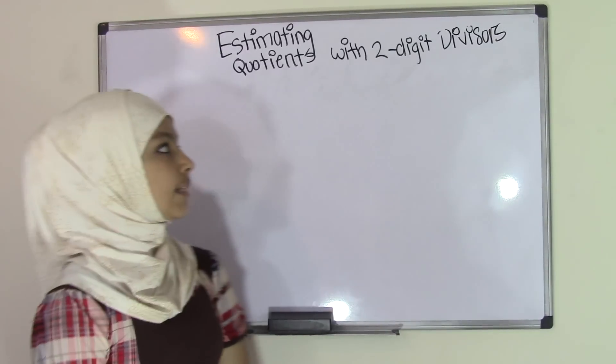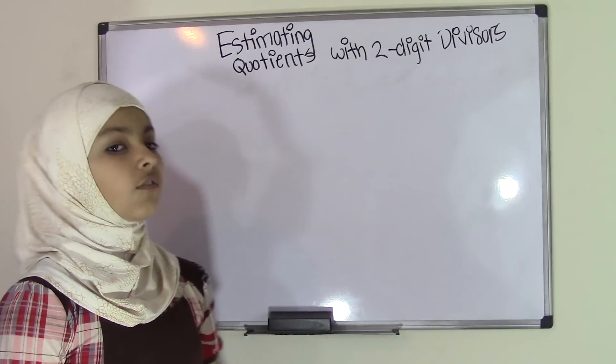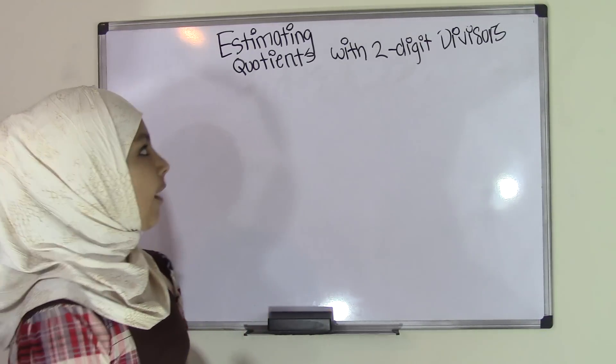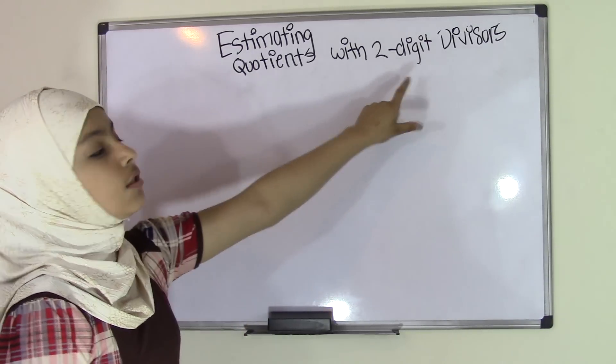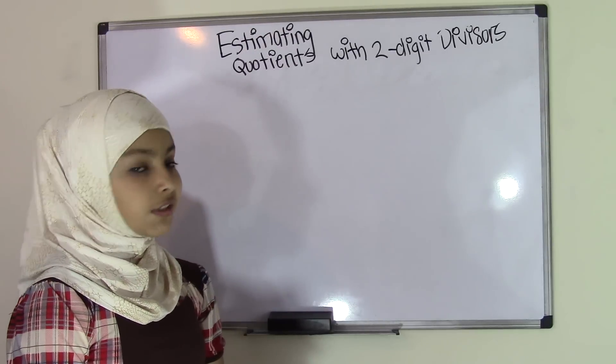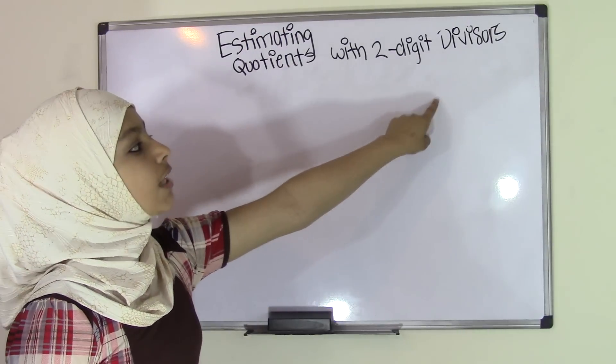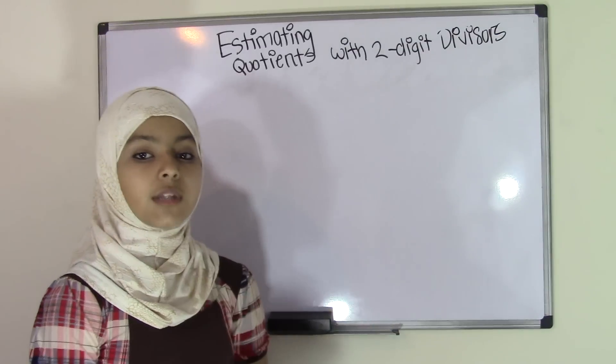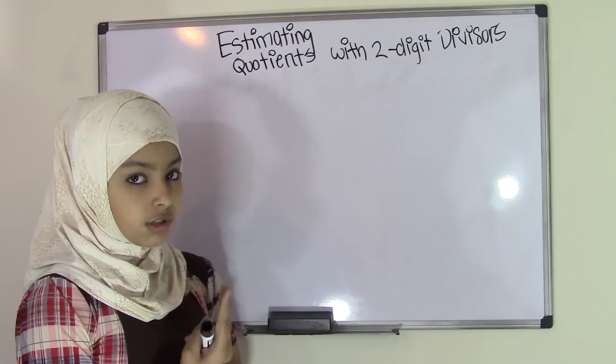Hey guys, today we'll be learning how to estimate quotients with two-digit divisors. The keywords are estimating quotients and two-digit divisors. Estimating immediately tells us that we're going to be rounding numbers, and two-digit divisors tells us that our dividends are going to be divided by numbers that hold two digits.